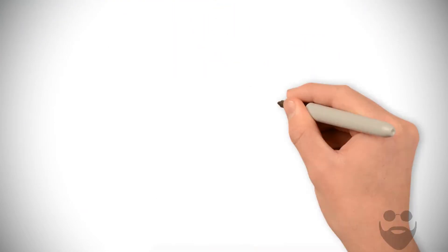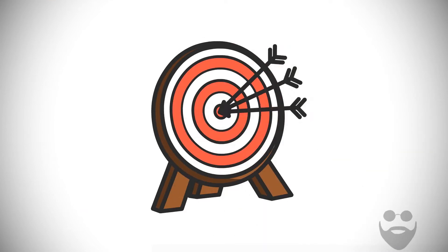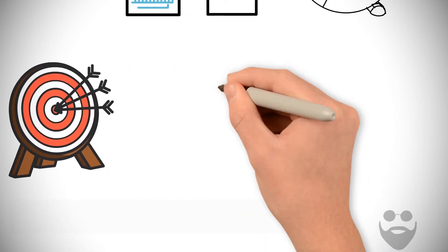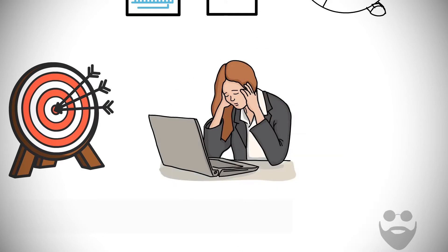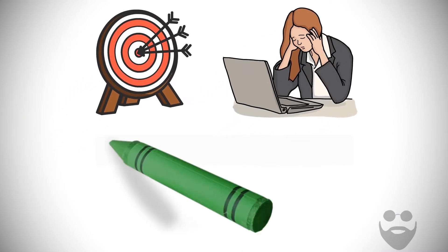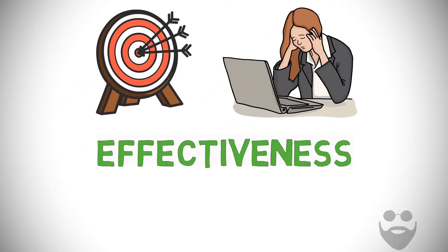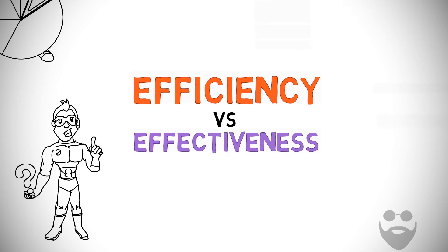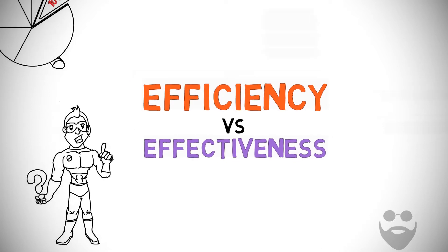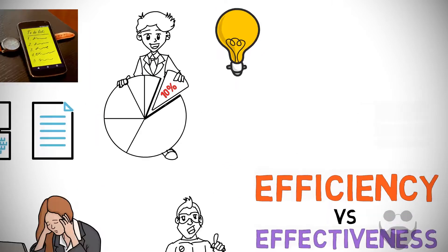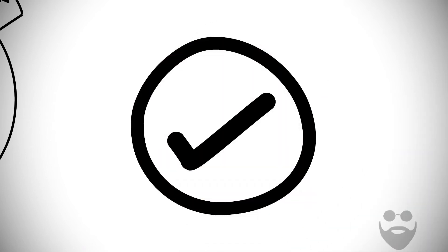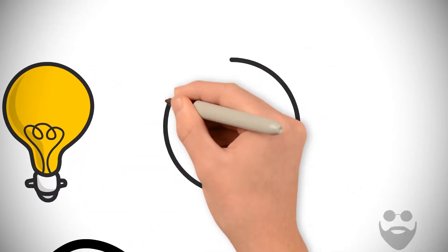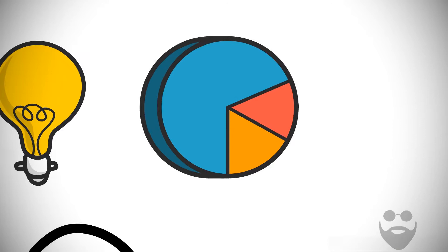I believe the obsession with efficiency is a massive distraction from the one thing that matters the most in productivity. It is effectiveness. But what is the difference between efficiency and effectiveness? Being effective is all about working on the right things. This is what yields the most productive results.